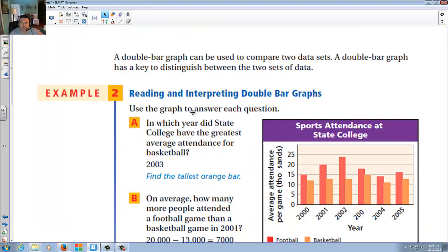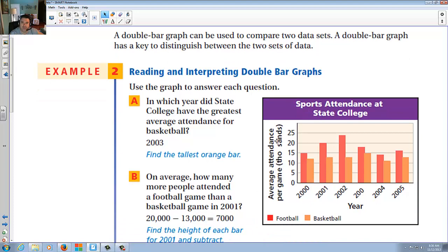A double bar graph is the same idea, but they have two different values. A double bar graph has a key to distinguish between the two sets of data. So here, for instance, average attendance, football and basketball. You'll notice that the red is for football. The light orange is basketball. I'm not good with the colors. And which year did State College have the greatest attendance for basketball?